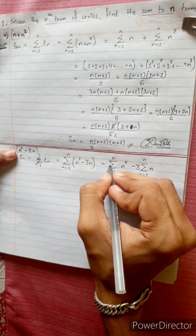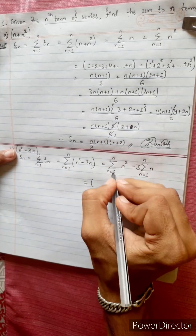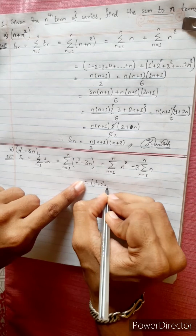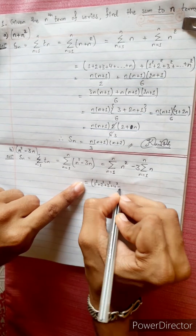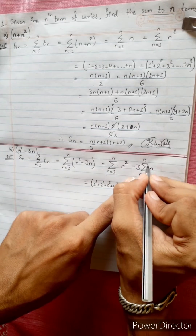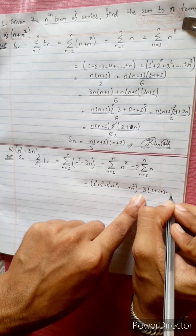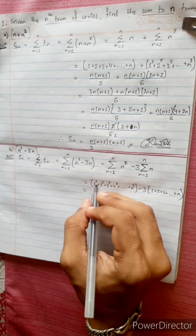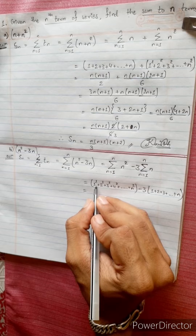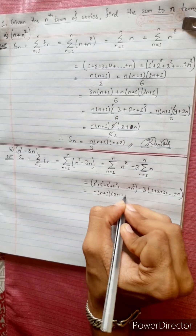Writing out terms: 1² plus 2² plus 4² and so on, minus 3 times the sum of natural numbers n equals 1 to n.